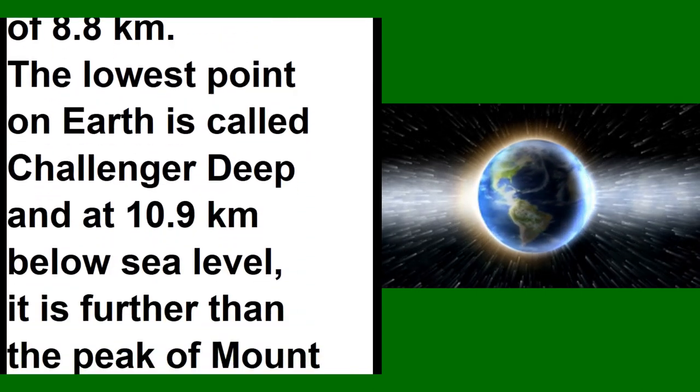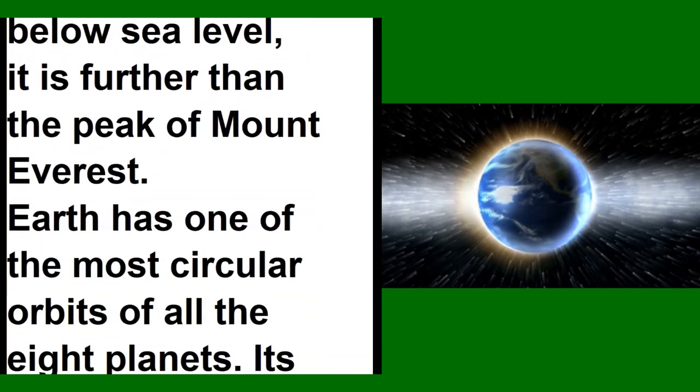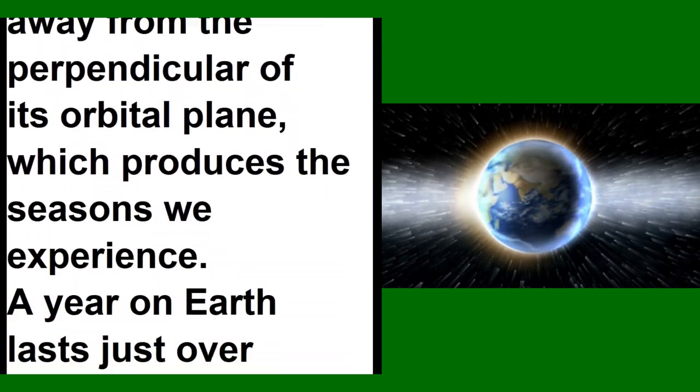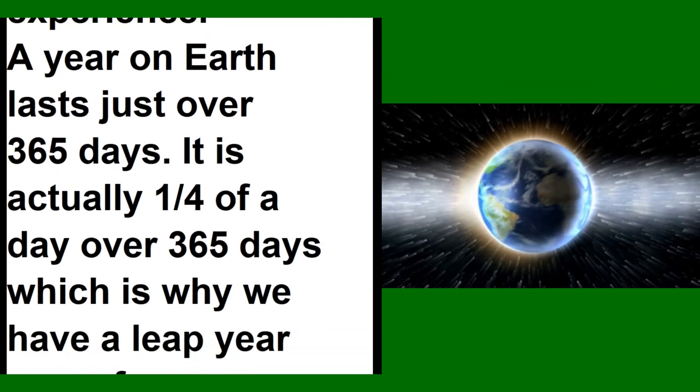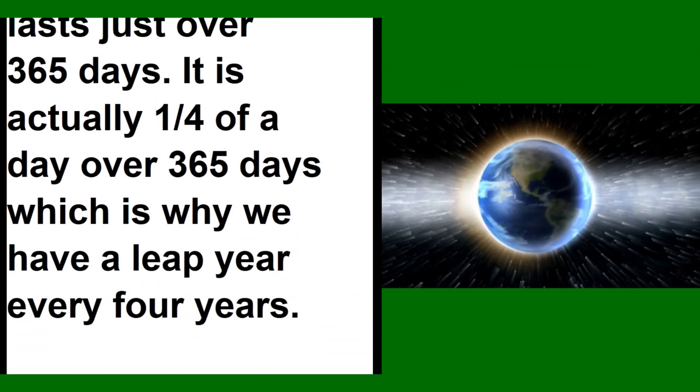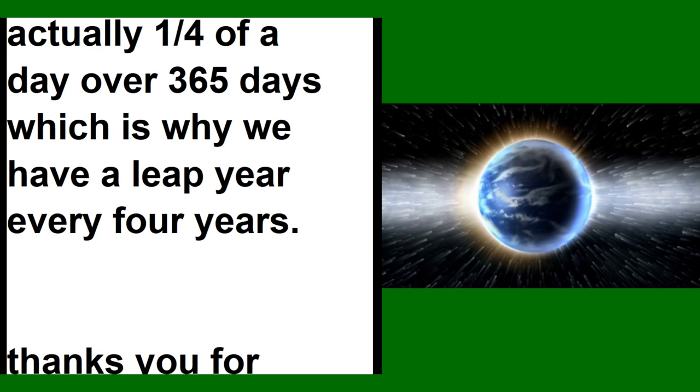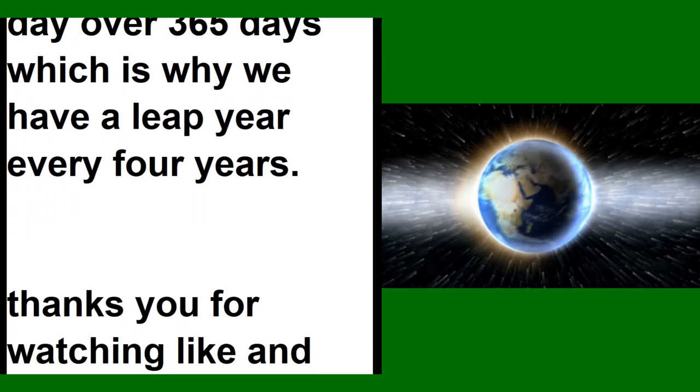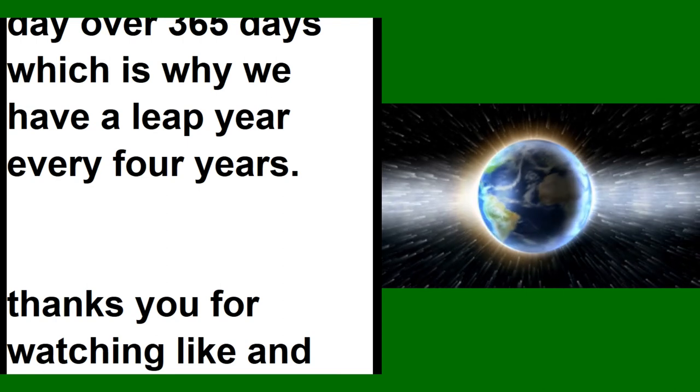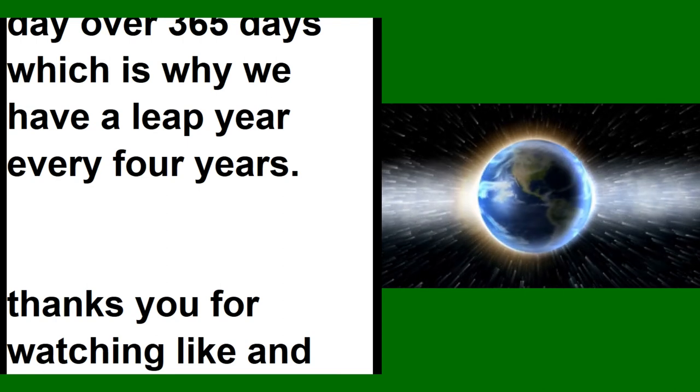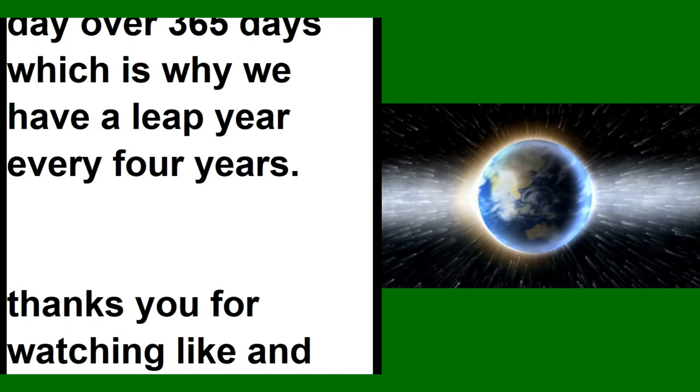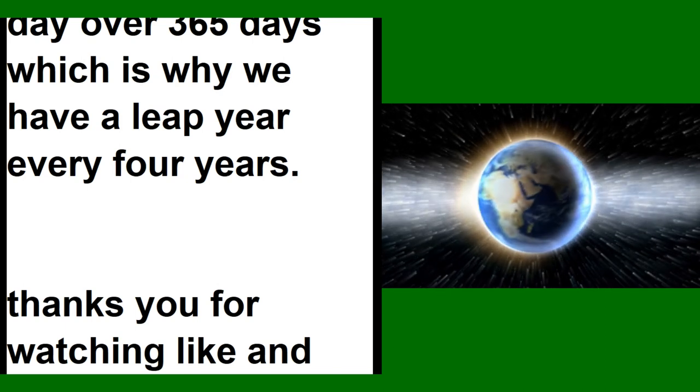Earth has one of the most circular orbits of all eight planets. Its axis of rotation is tilted 23.4 degrees away from perpendicular to its orbital plane, which produces the seasons we experience. A year on Earth lasts just over 365 days—actually one-fourth of a day over 365, which is why we have a leap year every four years. Thank you for watching, like and subscribe.